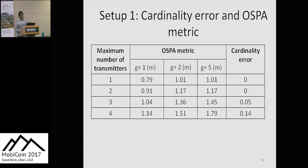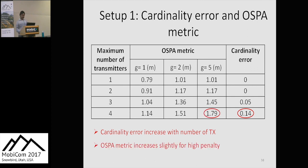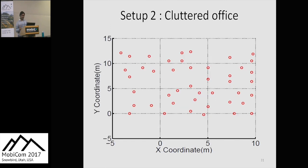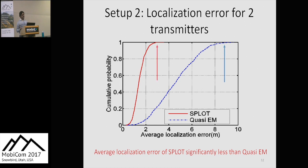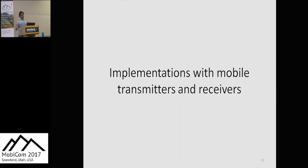We also analyzed the cardinality error and OSPA metric with three penalty levels of one, two, and five meters. The cardinality error increases as we increase the number of transmitters, which is intuitive. However, the OSPA metric doesn't increase significantly even with a high penalty of five meters. The next setup was a cluttered office environment with 44 sensors in a 15m×15m area. In setup two, the localization error for SPLOT is almost always less than three meters and again significantly better than quasi-EM.